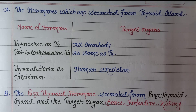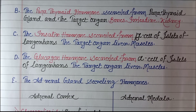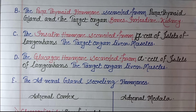Calcitonin basically acts on the skeletal system of the human body. Now the parathyroid hormone is secreted from the parathyroid gland, and the target organs of this hormone are bones, intestine, and kidney.